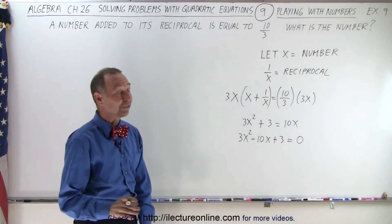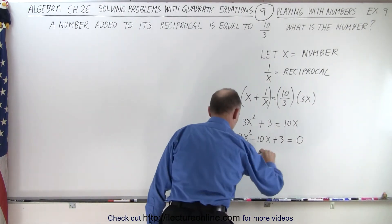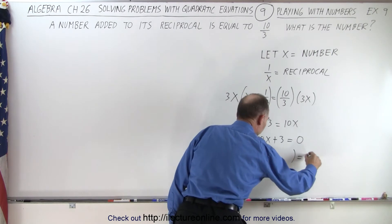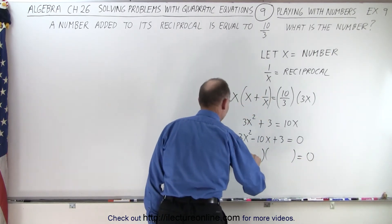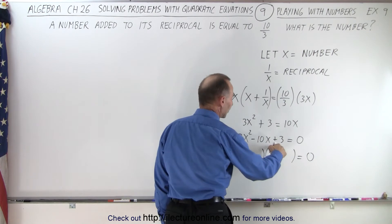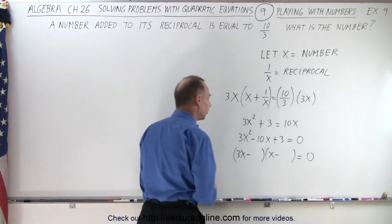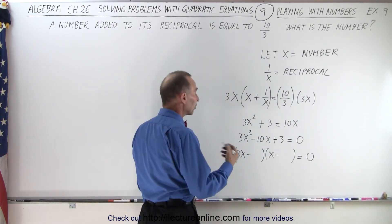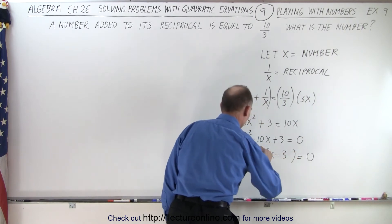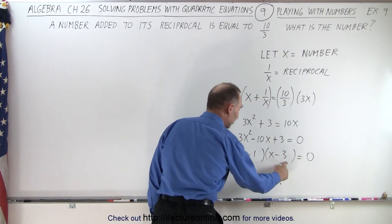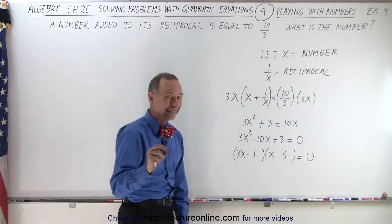And let's see if we can factor that one. So let's have two binomials. We need a 3x and we need an x. Negative here, positive there, and it means that they're both negative. And to get a 3, I need a 3 and a 1. So let's put the 3 there and a 1 there. 3 times 3 is 9. Plus 1 is 10. That works.